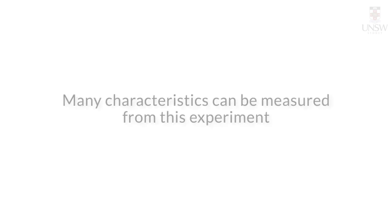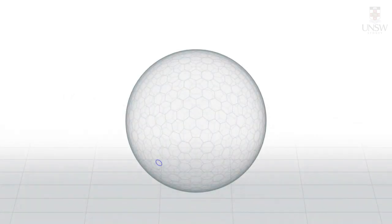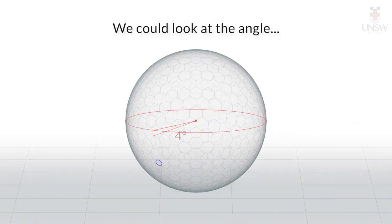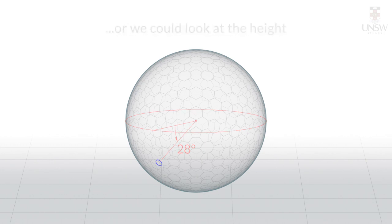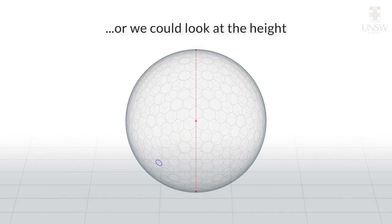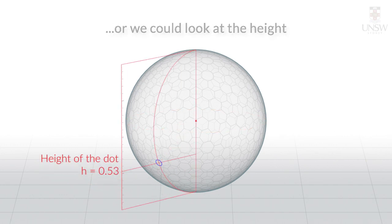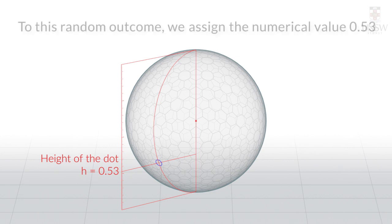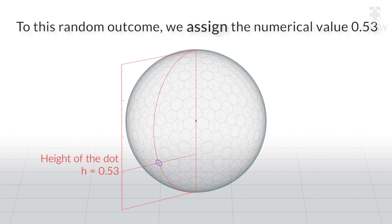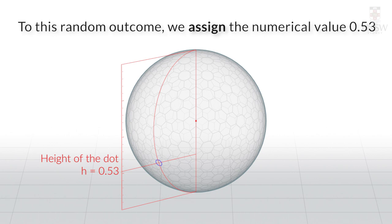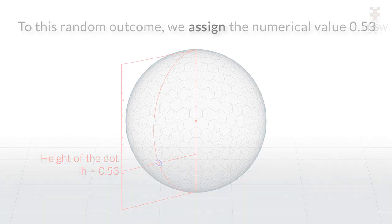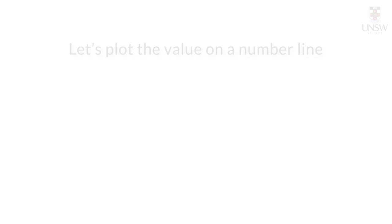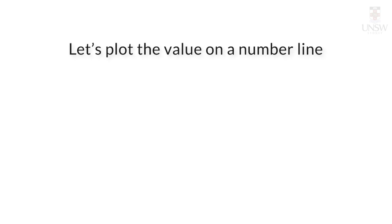In the previous experiment, we can measure many different characteristics. We could look at the angle, or we could look at the height. For instance, to this random outcome, we assign the numerical value 0.53. Now, let's plot the value 0.53 on a line.